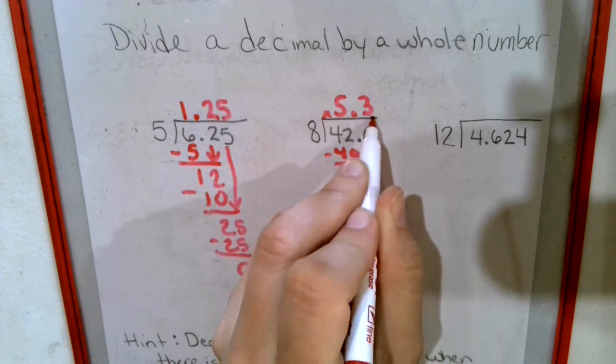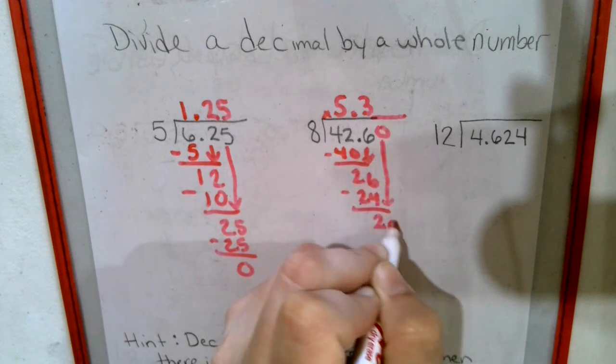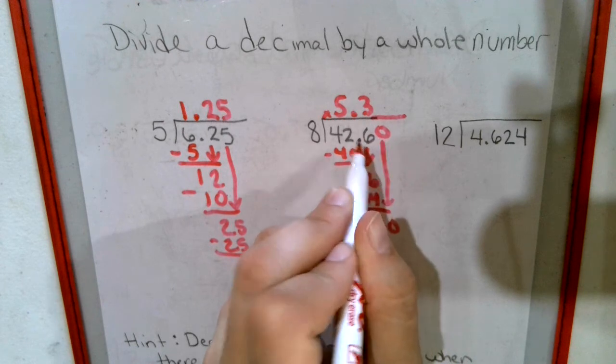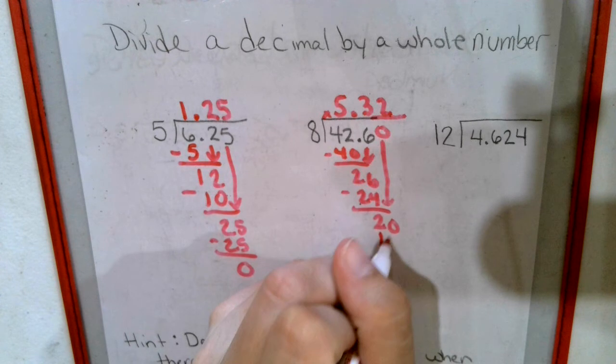Bring down the 6. 8 goes into 26 three times to make 24. 2 left over. Extend my line, add a 0 and bring it down. Notice how I didn't have to put a decimal point in front of that because I already have one. 8 goes into 20 twice, make 16.